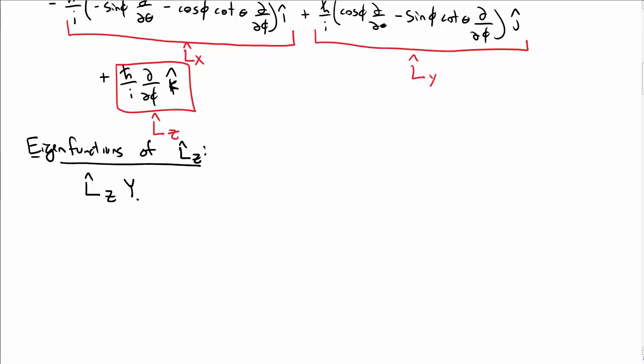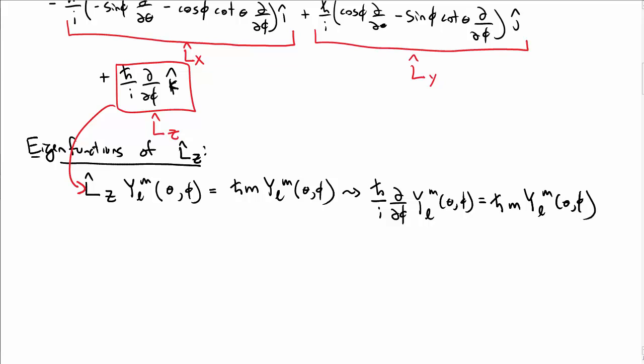So recall, L_z operates on Y_lm, and Y_lm is in principle now a function of theta and phi, by giving h bar m times Y_lm of theta and phi. So now let's insert what we know about L_z, so this turns into h bar over i d by d phi of Y_lm, and that must be equal to h bar m Y_lm. So okay, the h bars cancel. We solve this ordinary differential equation.